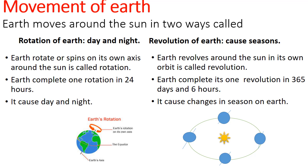Earth completes one rotation in 24 hours. Earth completes one revolution in 365 days and 6 hours. Rotation causes day and night while revolution causes changes in seasons.